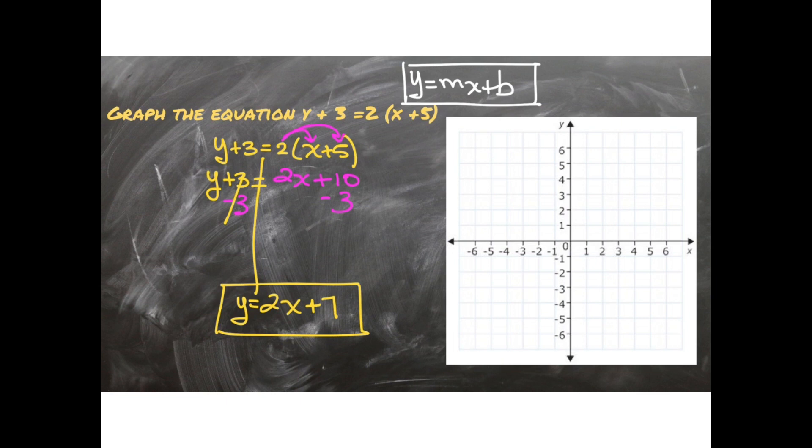Okay. So now I know the two things that I need to know: my y intercept or starting point or b, and also my slope or m, which is my rise over run. So we're going to start with our starting point which is 7, which is up here.